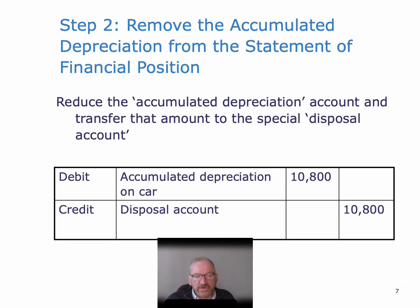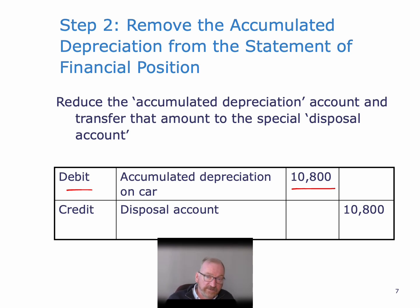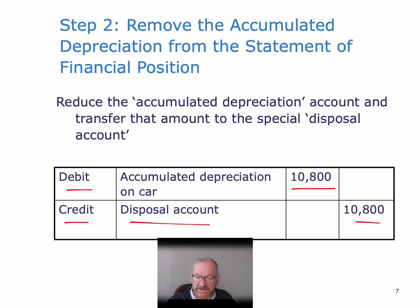Secondly, we remove the accumulated depreciation from the statement of financial position. The accumulated depreciation is generally a credit balance, as we saw from the last video where we recorded depreciation by debiting depreciation expense and crediting accumulated depreciation. So to reduce accumulated depreciation to zero, we need to debit that account. We debit accumulated depreciation with $10,800, which is three years of depreciation on the asset — three times $3,600. And again, we credit the special disposal account with $10,800.